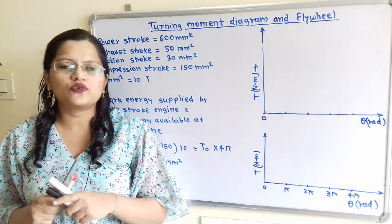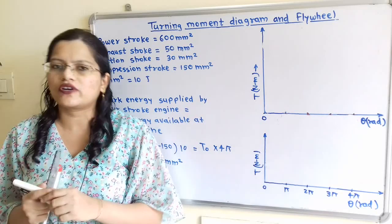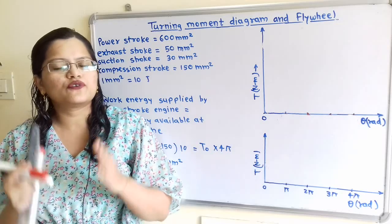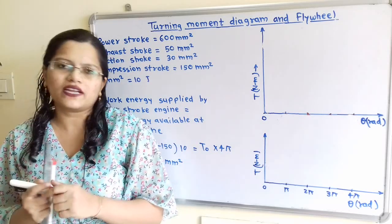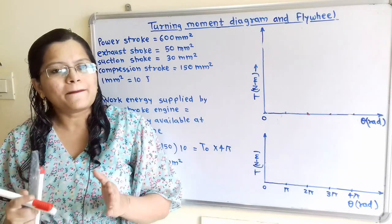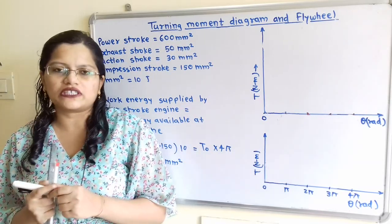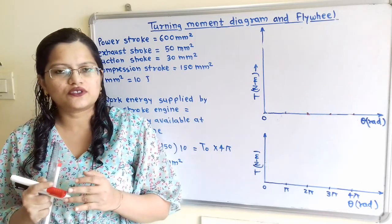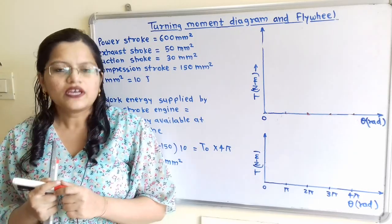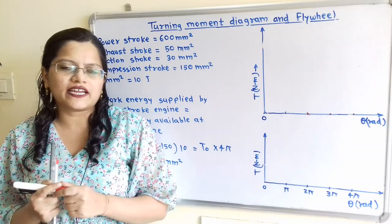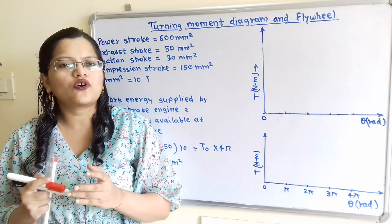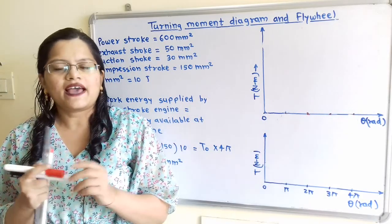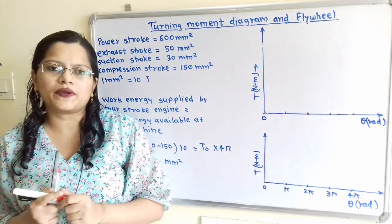Let us understand how to draw the turning moment diagram for a four stroke gas engine. In a four stroke engine, each stroke is completed during half a revolution, that means 180 degrees. To complete all four strokes, two revolutions are completed. The four strokes are: suction stroke, compression stroke, power stroke, and exhaust stroke. During the power stroke, work energy is developed, while during the suction stroke, compression stroke, and exhaust stroke, work energy is consumed. We have to show this on the turning moment diagram.